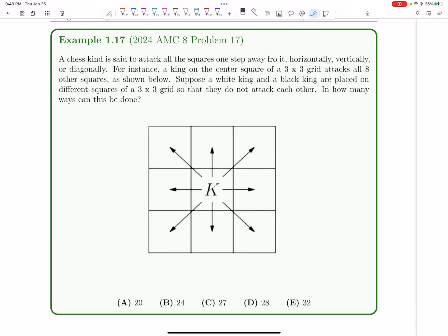Let's solve number 17 on the AMC-8. A chess king attacks all squares that are one step away from it, horizontally, vertically, and diagonally. We're asked to find how many ways can you place two kings on the board such that they don't attack each other.